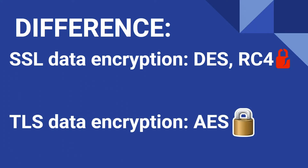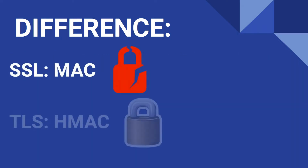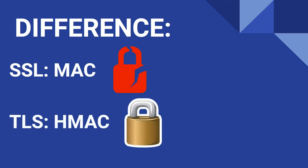SSL uses something called a Message Authentication Code, whereas TLS uses a Hashed Message Authentication Code (HMAC). The difference between these two functions gets pretty far down into the weeds, so it won't be covered in detail here. The key thing to know is that HMAC is more secure because it uses a secret key in the hashing function that it performs.